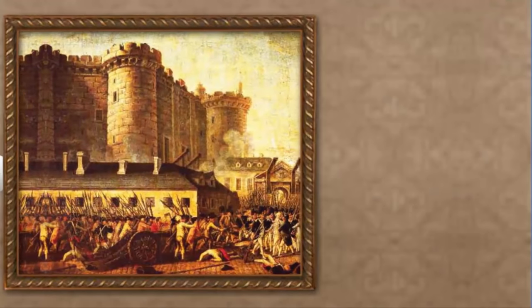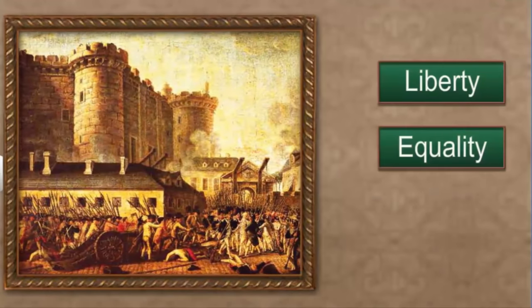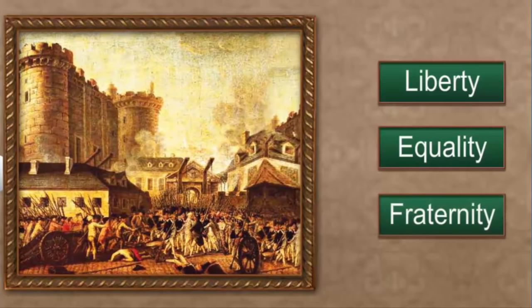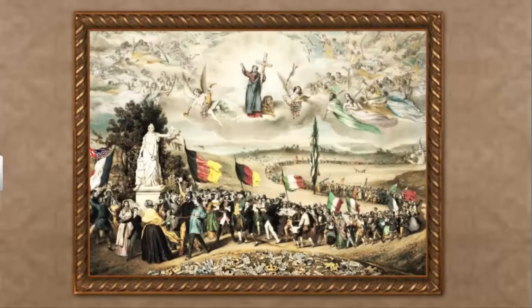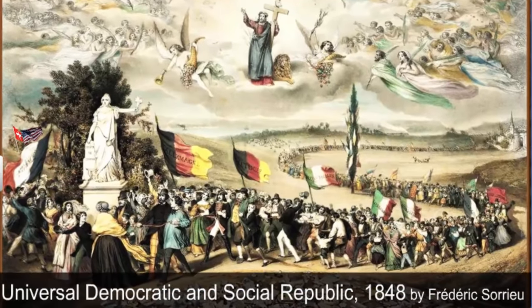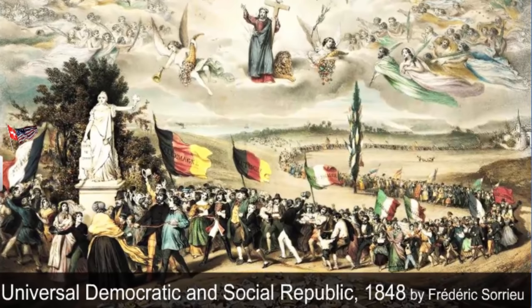The concepts of liberty, equality, and fraternity were touchstones of the French Revolution. This is a famous piece called Universal Democratic and Social Republic by French artist Frédéric Soran. He had visualized a utopian world made up of democratic and social republics. A utopian vision is the vision of a perfect society that is so ideal that it is unlikely to actually exist.